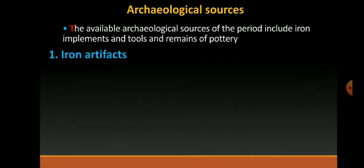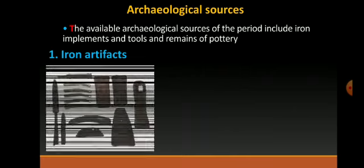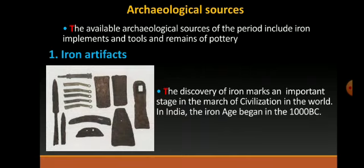First we will see iron artifacts. The discovery of iron marks an important stage in the march of civilization in the world. In India, the iron age began in 1000 BC. The village farming communities gradually disappeared in large parts of India from the Gangetic plains to peninsular south.